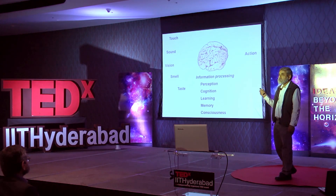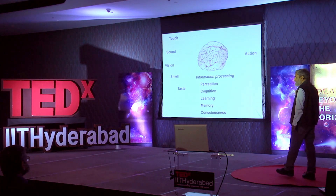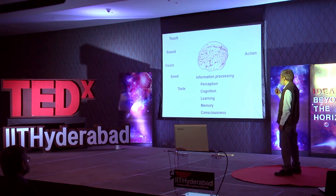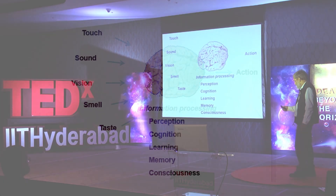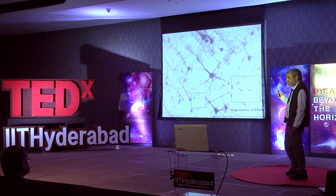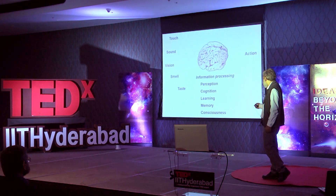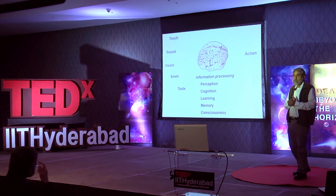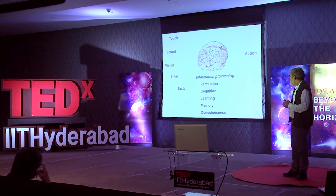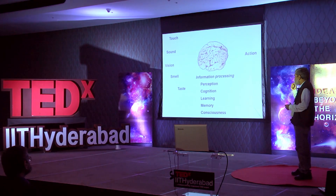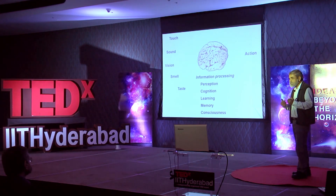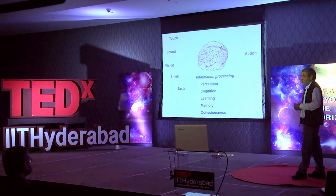There is absolutely no single theory which can put forward an idea about how the brain works. The brain does simple things: it gets information from different senses about the world around us, that information is processed, it creates a concept of the world around us, it leads to completion — meaning we are putting that information together — there is learning, and memory is formed, and of course it results in consciousness.